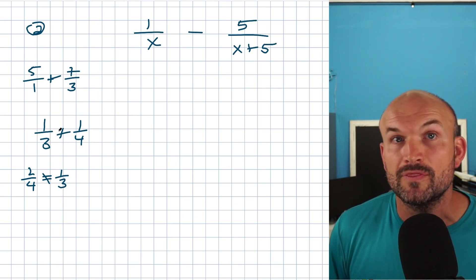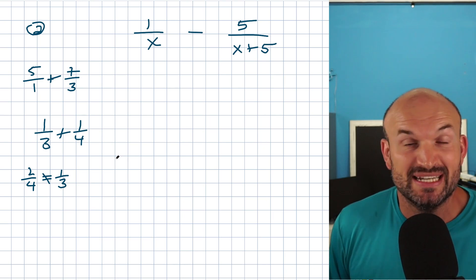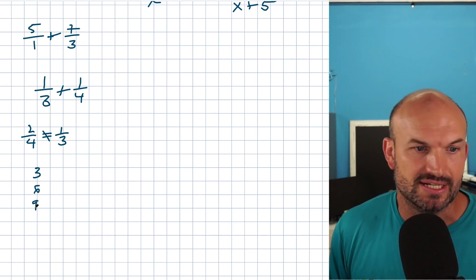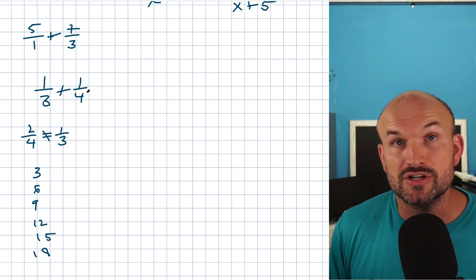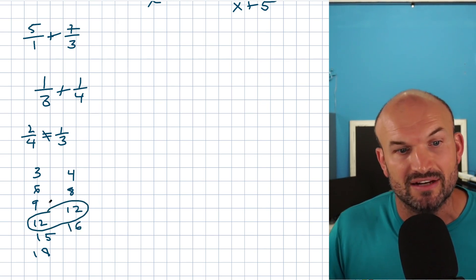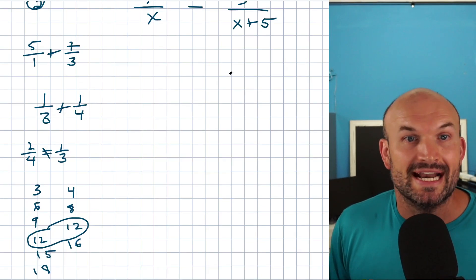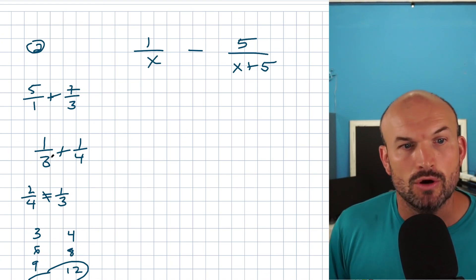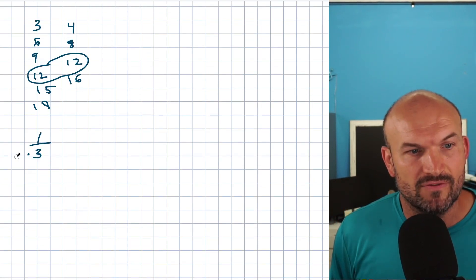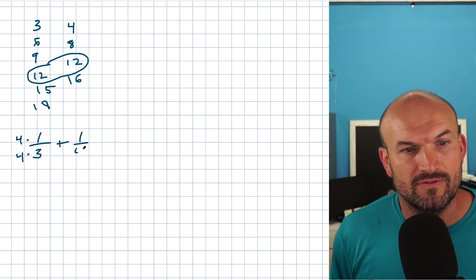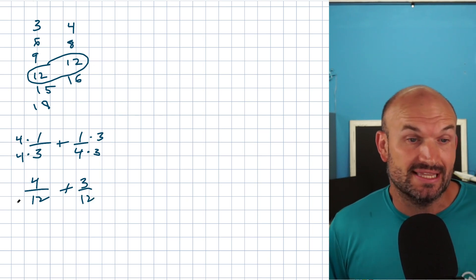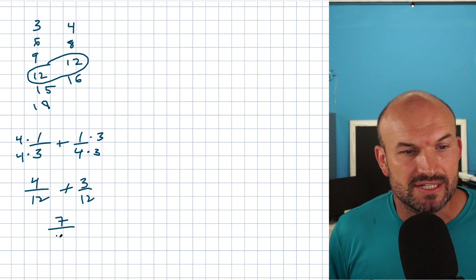How do I find the least common denominator of one third plus one fourth? We need to find the smallest number they both divide into. The long way is to list multiples: three, six, nine, 12... and four, eight, 12. The smallest common multiple is 12 — our least common denominator. So I multiply one third by four over four, and one fourth by three over three, giving four over 12 plus three over 12, which equals seven twelfths.